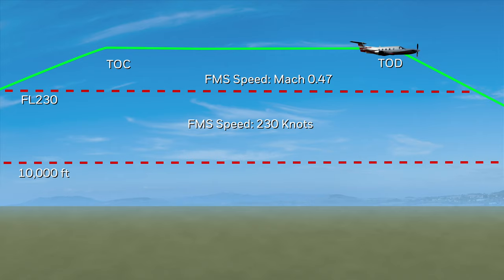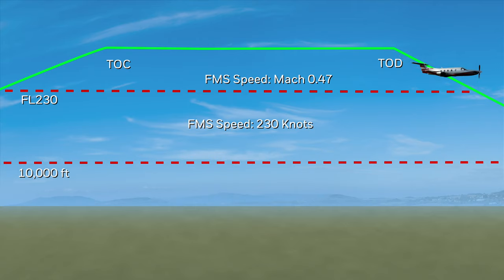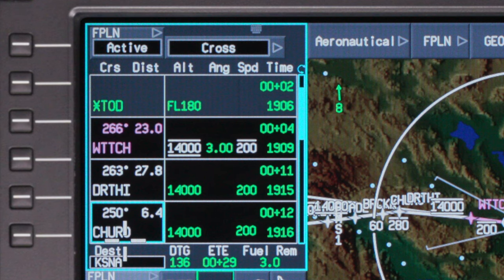These speeds can be modified on the performance initialization tab. The FMS speed for the descent is Mach 0.47 until reaching the crossover altitude, then it changes to 230 knots. The FMS will also comply with any speed restrictions on the arrival, as long as they exist in the flight plan.